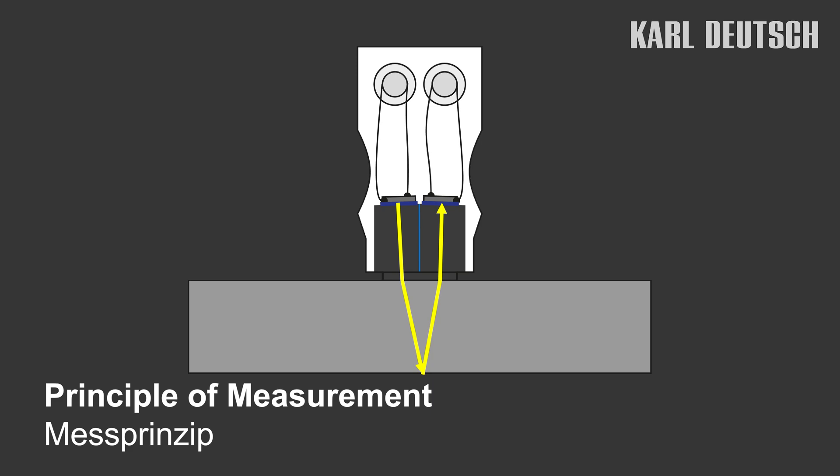The ultrasonic pulse is sent into the material by the probe. It is reflected at the back of the wall and returns to the probe as an echo. The ECHOMETER measures the time until the sound returns to the surface. The wall thickness can be determined from the time measurement and the known sound velocity of the material.